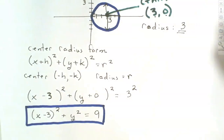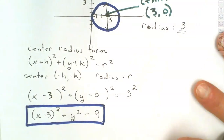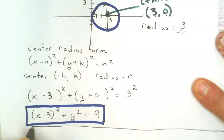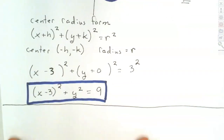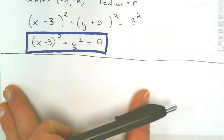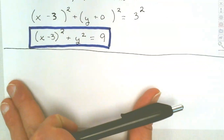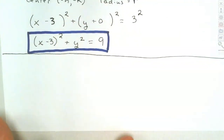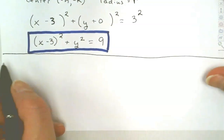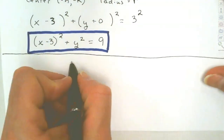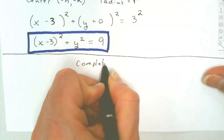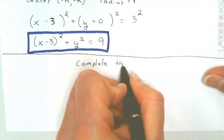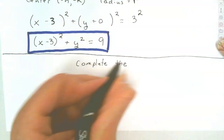Equations are not always in center-radius form, so if they're not, we have to use what's called completing the square. I'm going to give you some examples and we're going to fill in the missing pieces — complete the polynomials.